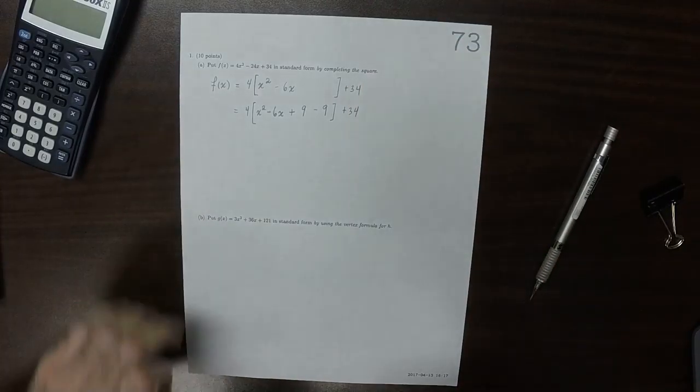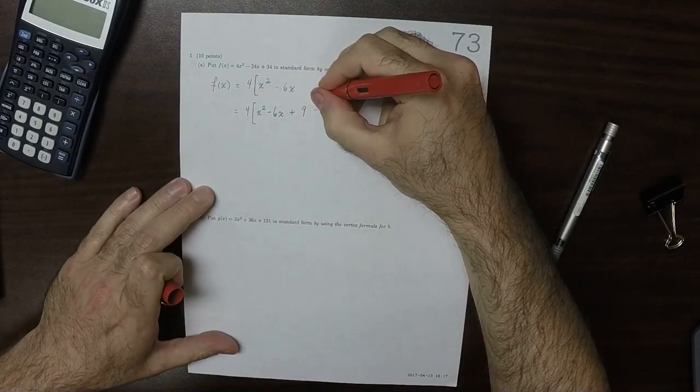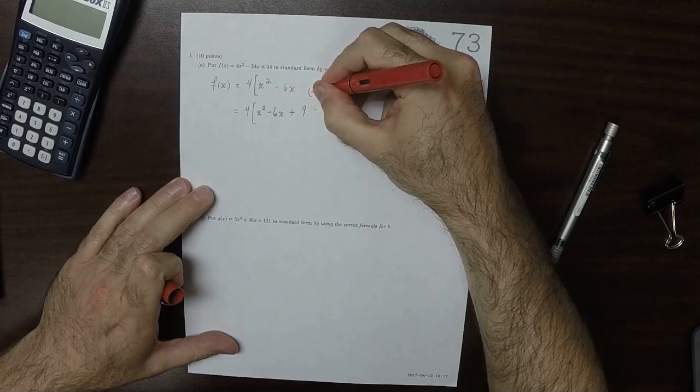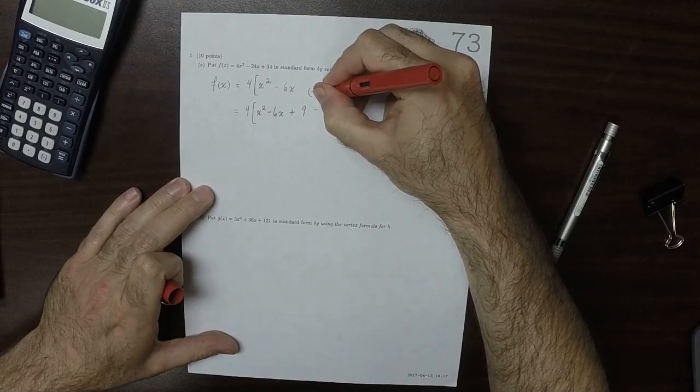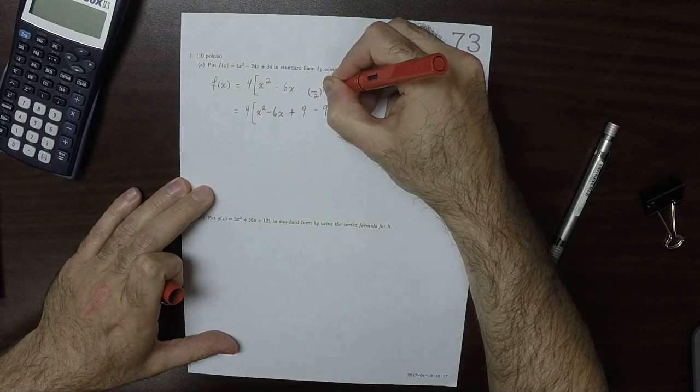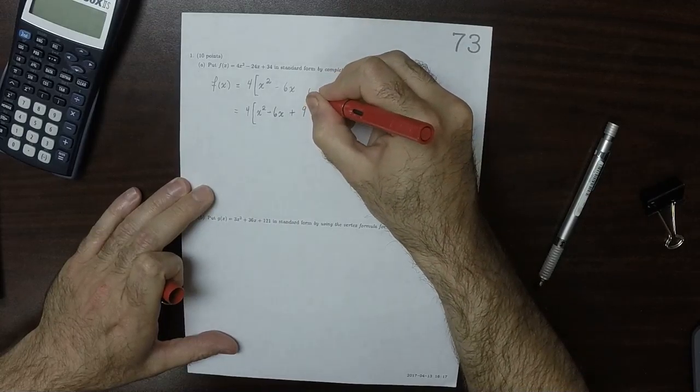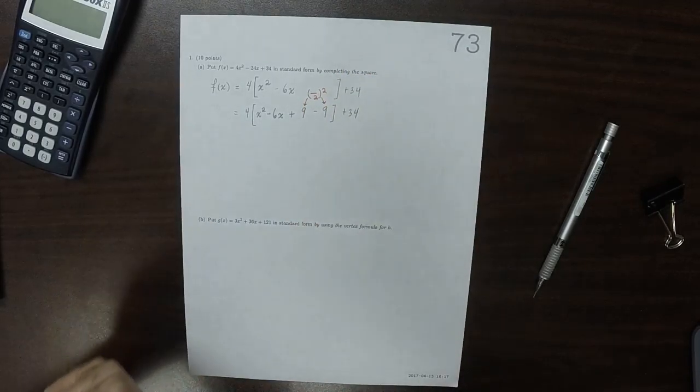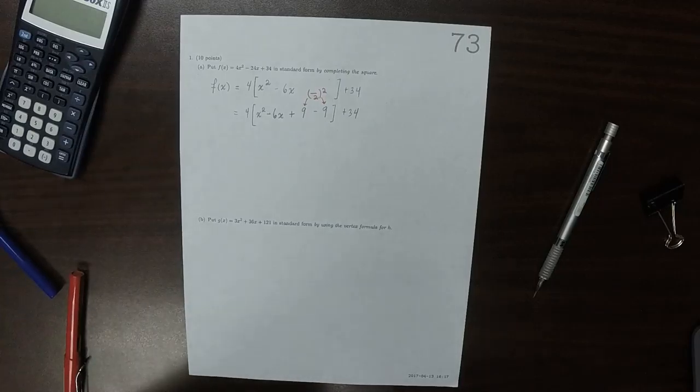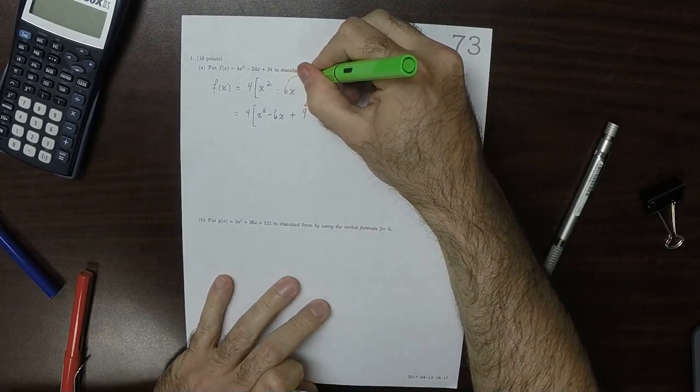Again, this is always that value over 2 squared. Add that much, and subtract that much, and it's this number that goes in there.